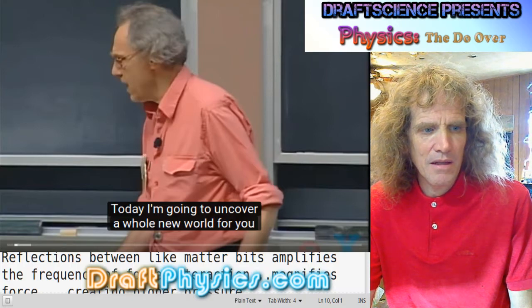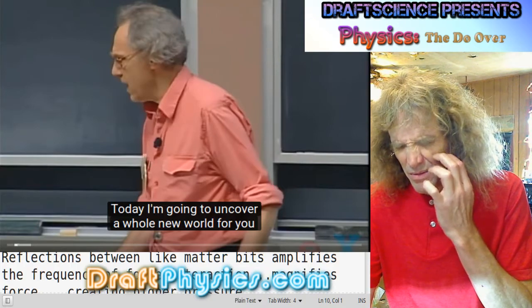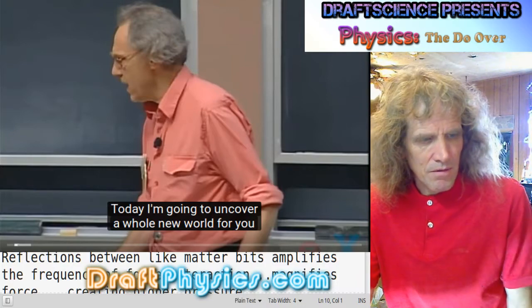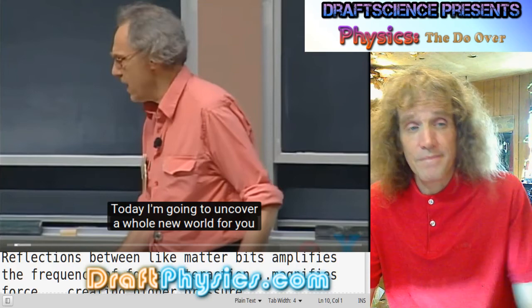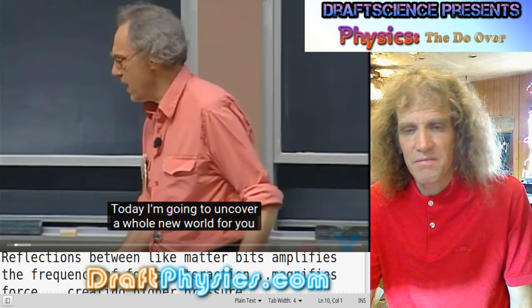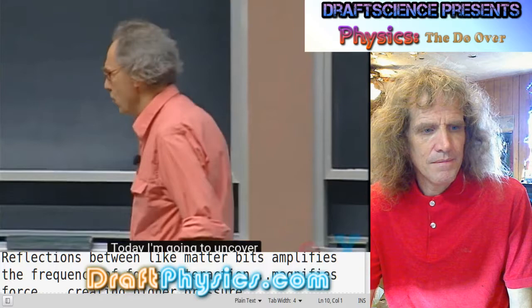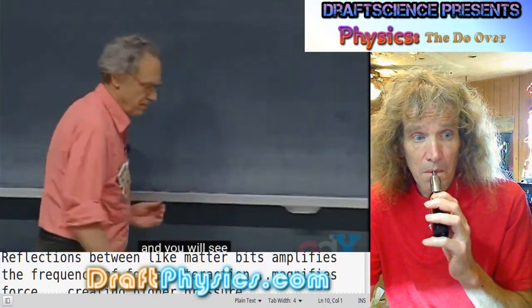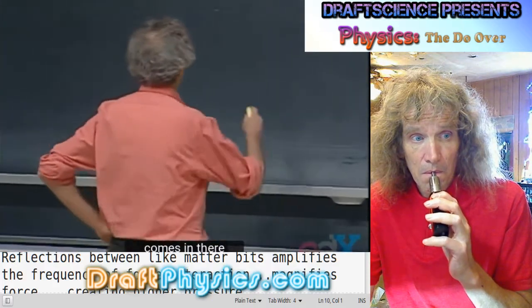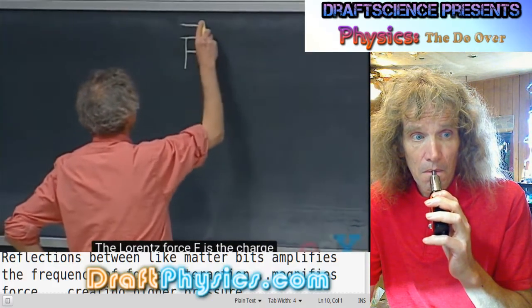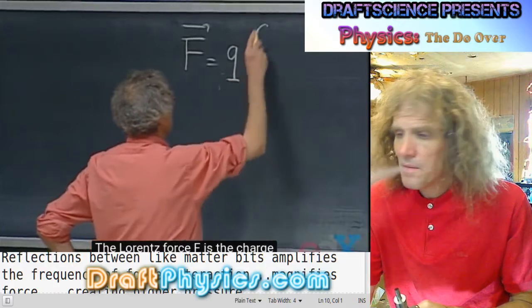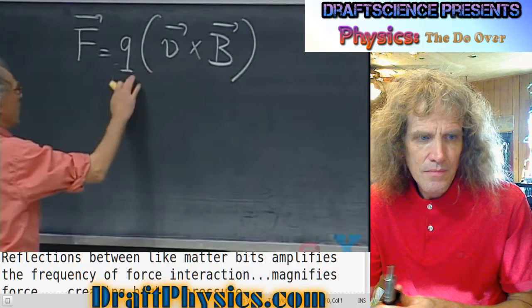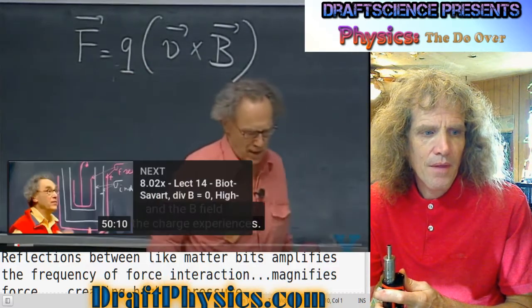So I skipped lecture 12, which was a review for the exam, and the first minute or so of this video was just a review of the tests. Today I'm going to uncover a whole new world for you, and you'll see how 802 comes in there in a very natural way. The Lorentz force F is the charge times the cross product of the velocity of that charge and the B-field that the charge experiences.